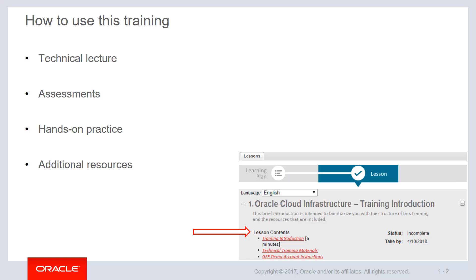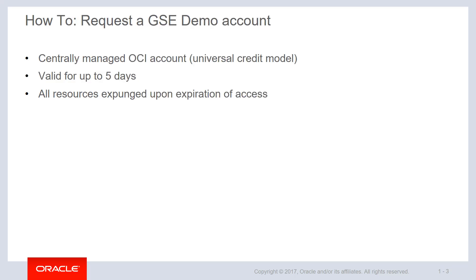These demo accounts are provisioned by GSE and made available to help complete the hands-on exercises. You will go to demo.oracle.com and follow the instructions to request the account. These are OCI accounts that are also tied into Identity Cloud Service or My Cloud Services, and they're designed to mimic the universal credit model accounts that customers would see.